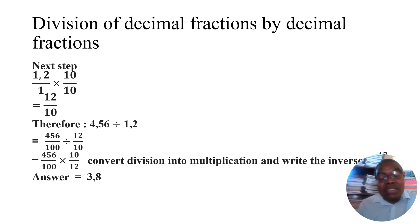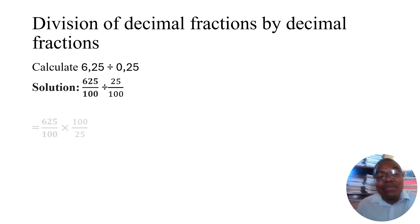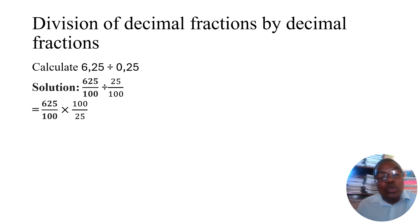Let's look at another example. In this case we have two digits after the comma: 6.25 divided by 0.25. Remember, if there are two numbers after the comma the denominator is 100. So we have 625 over 100 divided by 25 over 100. Convert division to multiplication: 625 over 100 times 100 over 25. The solution is 25.